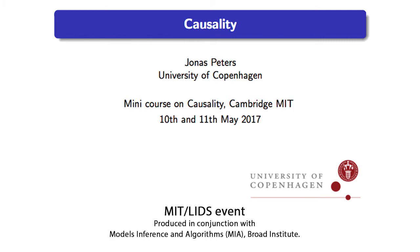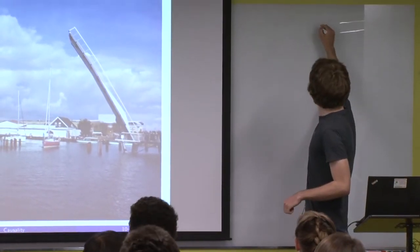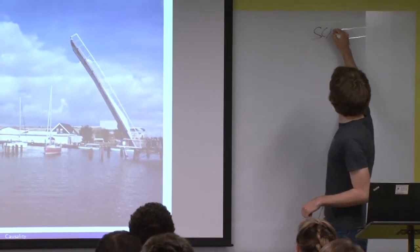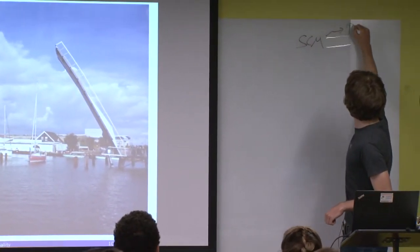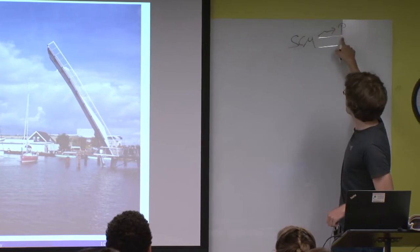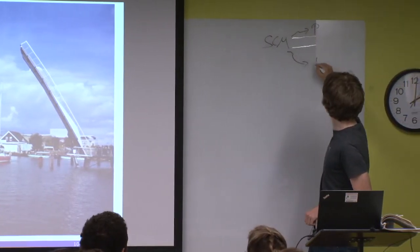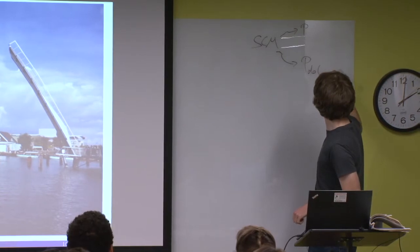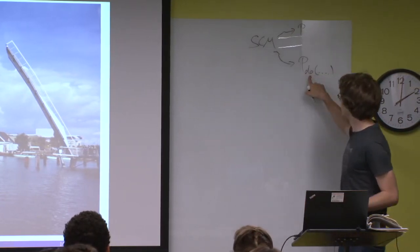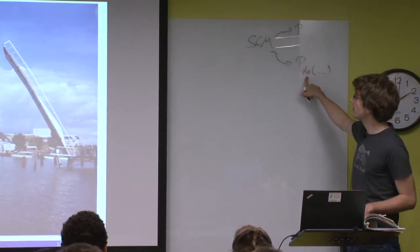Thanks for showing up again - it's a good sign to see you back. So maybe a small recap: what did we do so far? We learned about structural causal models and the idea that they always induce an observational distribution and also some interventional distributions denoted by these do-interventions.